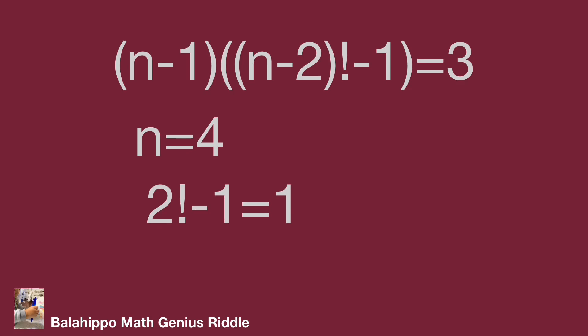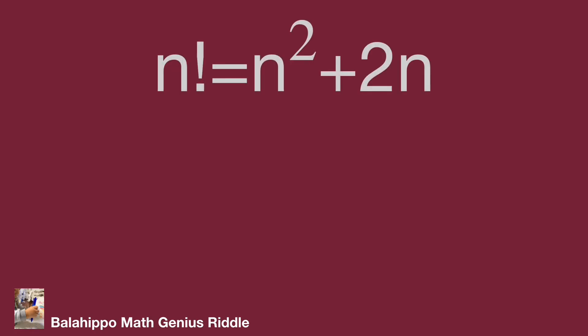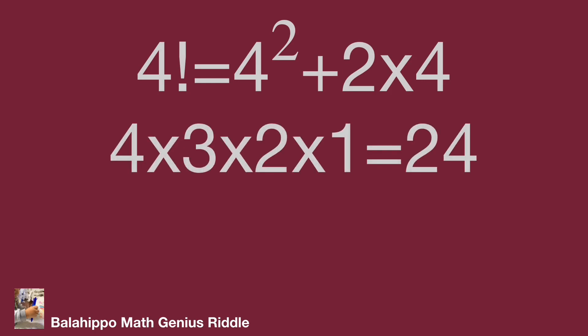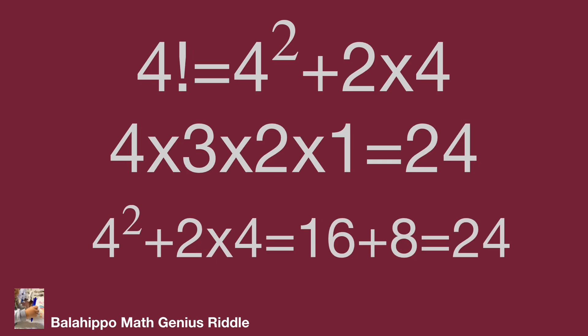While n equals 4, let's reconfirm with the original question: n factorial equal to n squared plus 2n. Substituting n equals 4: 4 factorial equals 4 squared plus 2 times 4. 4 factorial equals 4 times 3 times 2 times 1, which equals 24. And 4 squared plus 2 times 4 equals 16 plus 8, which equals 24. So it is the right answer.